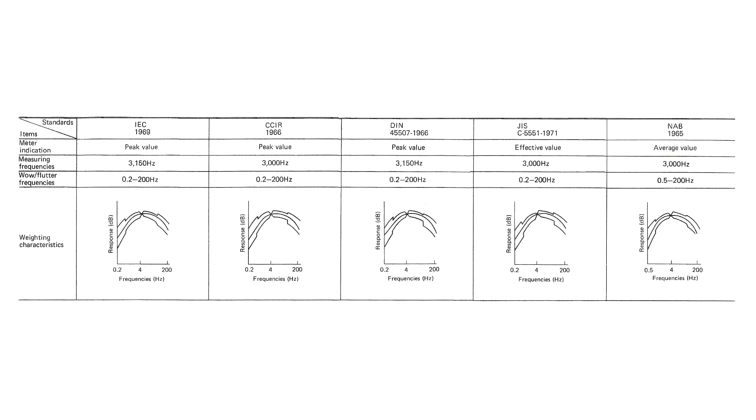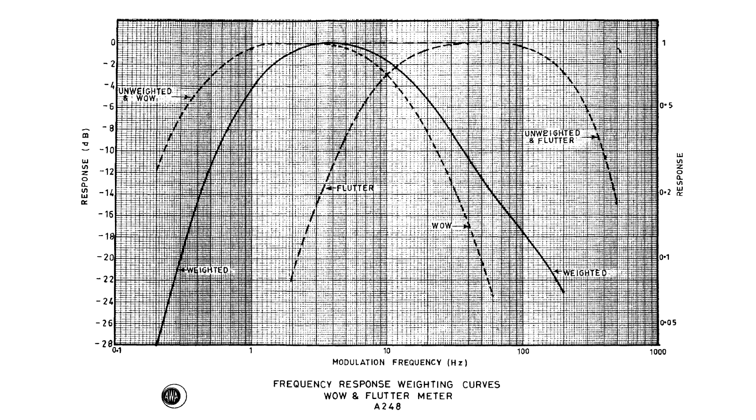The weighting characteristics define not one, but four response curves: unweighted Wow and Flutter, weighted Wow, weighted Flutter, and weighted Wow and Flutter combined.